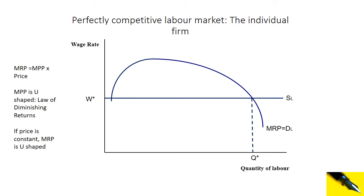The supply curve for the individual firm is horizontal — the firm is a wage taker. The firm has no influence over the wage rate that it pays its workers. To understand this, you need to watch the Lego video, which will explain why the labour supply curve is horizontal and why it is upward sloping in the monopsony case. You need to pause this video now and watch the Lego video before moving forward.